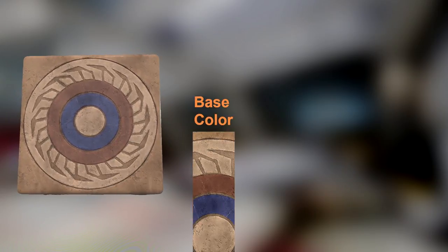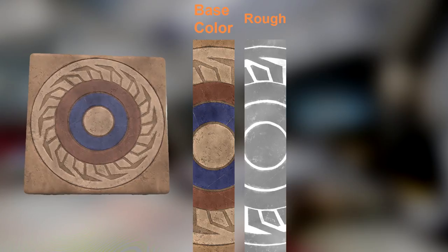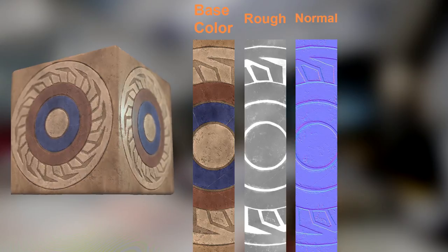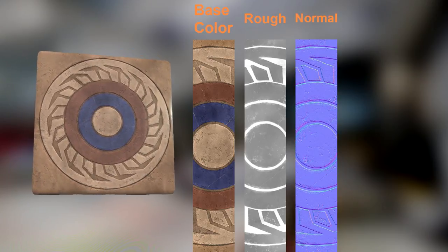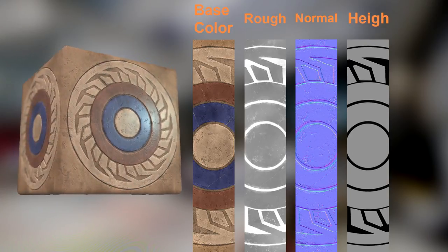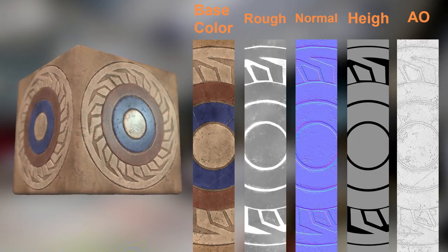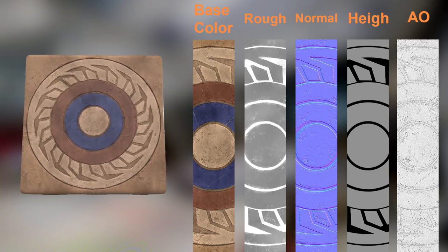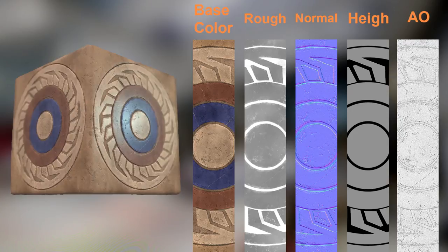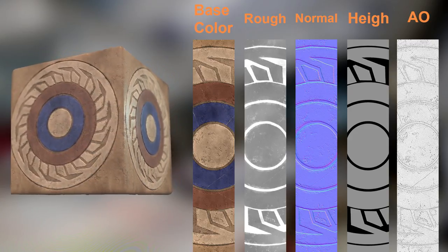Let's look at the maps we're going to be creating. First, the base color map—just an RGB thing giving all our color information. Then roughness, which controls where light interacts and reflects off the object. The normal map gives small subtle height details like grunge and scratches. The height map covers bigger objects like circles and shapes. Finally, the AO map—ambient occlusion—gives artificial shading on crevices and adds a shadow effect that sharpens details.